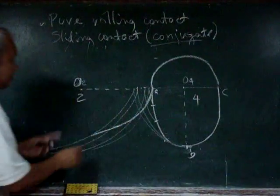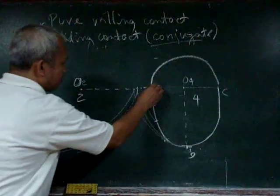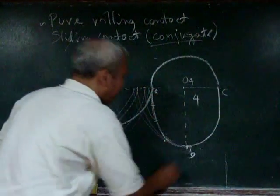So this is the shape of body 2 in contact with body 4 for that particular part, AB.